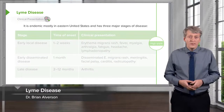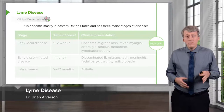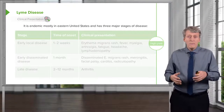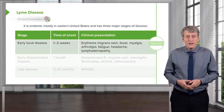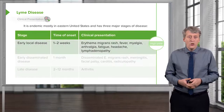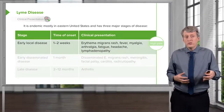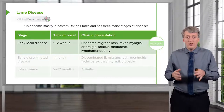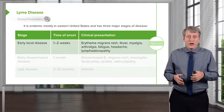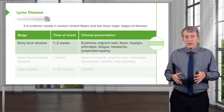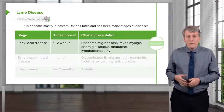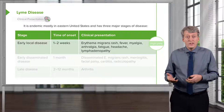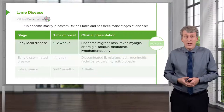Lyme disease is endemic mostly in the eastern United States and has three major stages. Early local disease usually happens one to two weeks after the bite of the tick. This presents with the classic rash of erythema migrans, or erythema chronicum migrans. Patients will have fever, myalgias, arthralgias, fatigue, headache, and may have some lymphadenopathy.